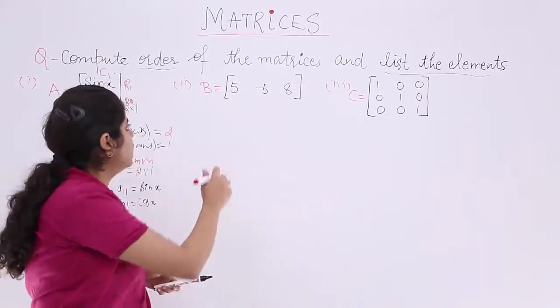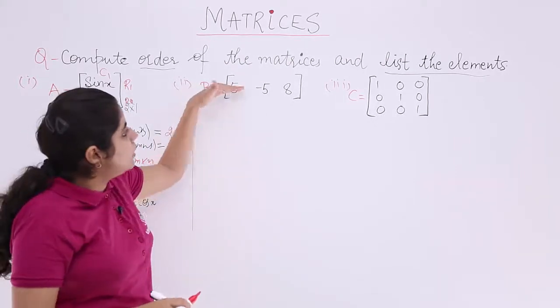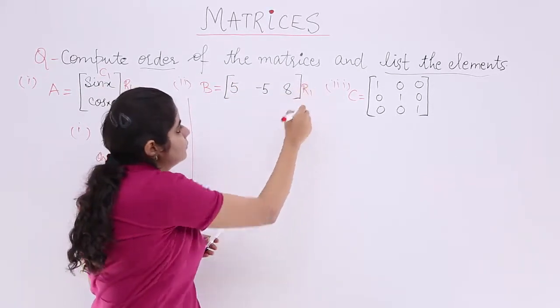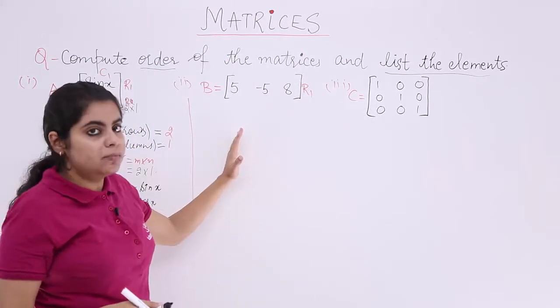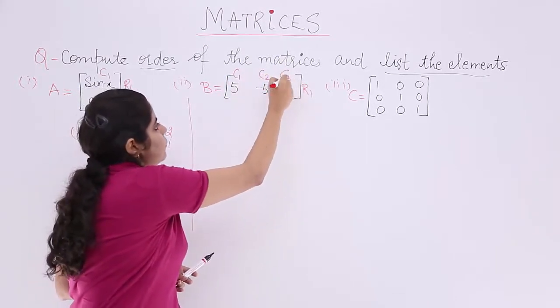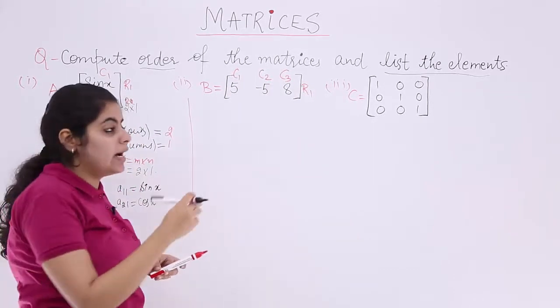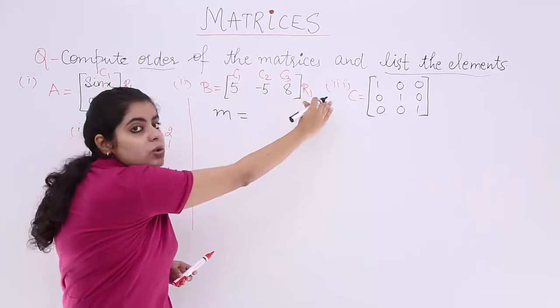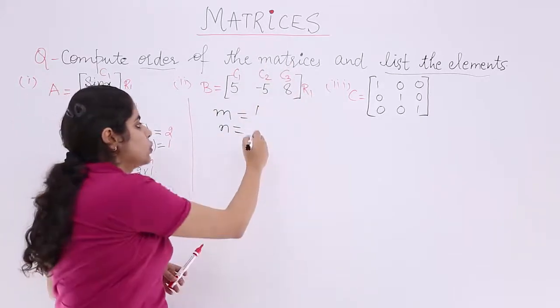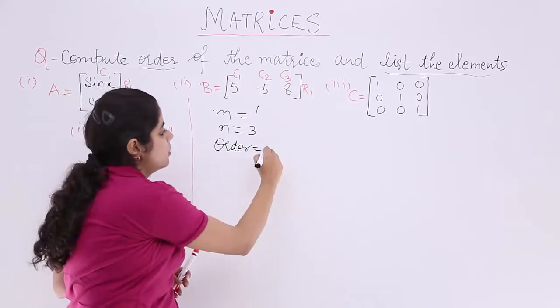The second array is array B. Array B has how many rows? This is only one horizontal thing, so it is only one row, R1. How many columns? First column, second column, third column. So it is C1, C2, C3. Number of rows is denoted by M. So M is one row. N is columns. How many columns? 1, 2, 3, so it is 3. What is the order? Order is M by N, so it is 1 by 3.